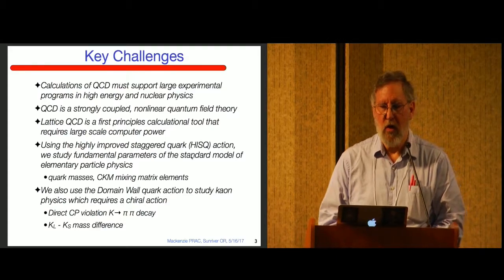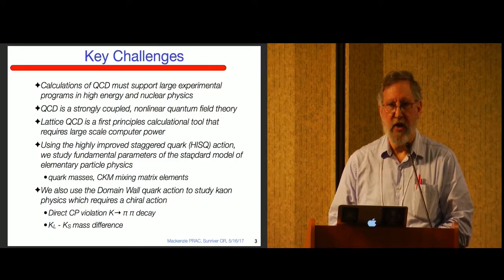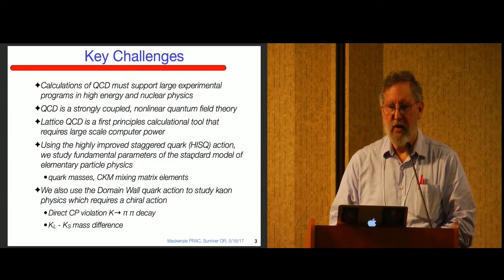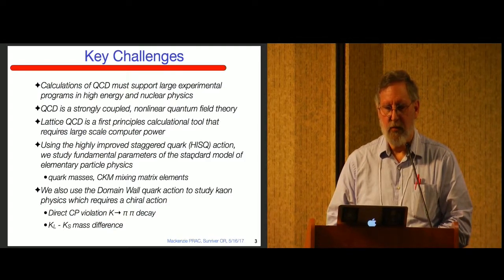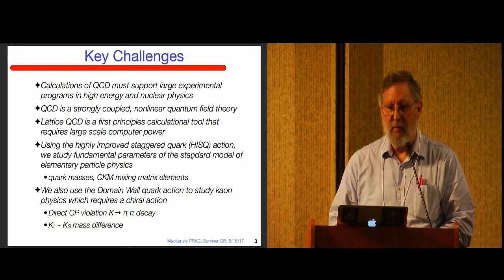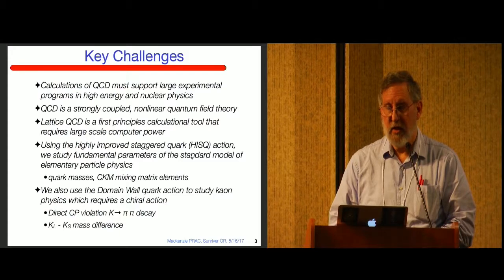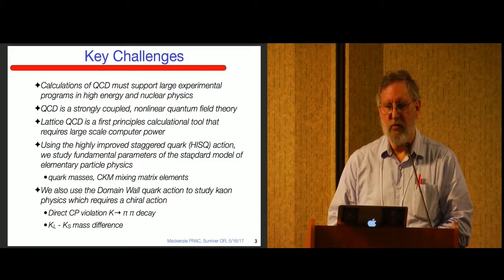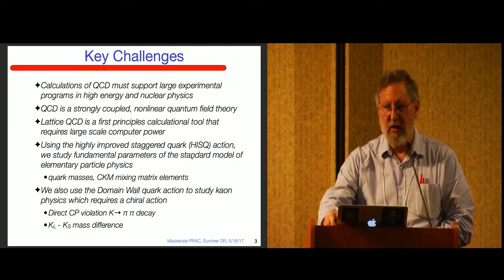We have two different parts of this PRAC. One part we study what are called highly improved staggered quark action, which was developed by the HPQCD collaboration, and we use that to study fundamental parameters of the standard model including quark masses and CKM mixing matrix elements. We also use the domain wall action, which has very good properties for light quarks or light mesons like pions, and so we study direct CP violation and the K long, K short mass difference.